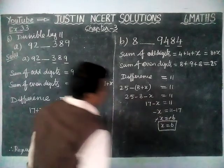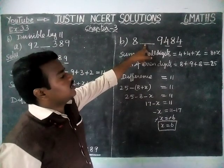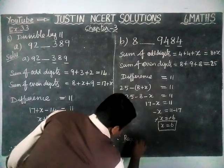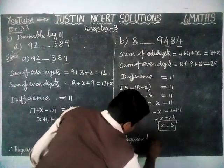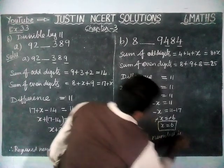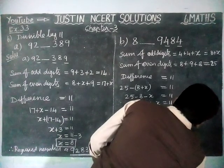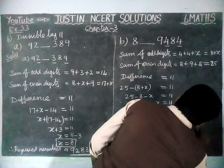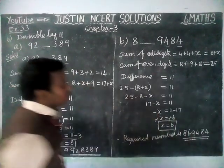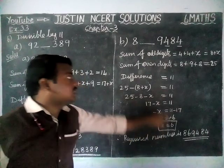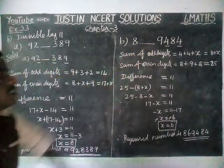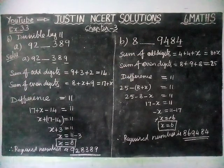Therefore the required digit in the blank space is 6. The required number is 8, 6, 9, 4, 8, 4 — that is 869484. By filling the blank with 6, the number is divisible by 11.